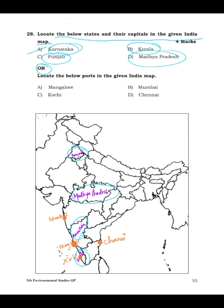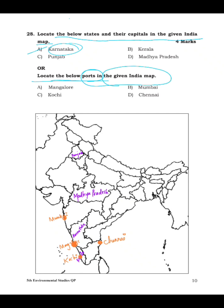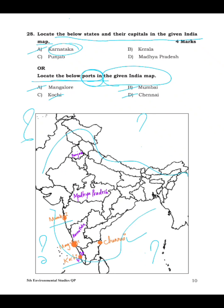Or the other option: locate the below ports in the given India map. A port is where ships land. First, Mangaluru — it comes in Karnataka. Next, Mumbai port. Then Kochi — here is Kochi. And Chennai — here is the Chennai port. You may also be asked about oceans, neighboring countries, or neighboring states of north, south, east, or west.